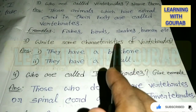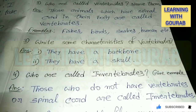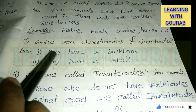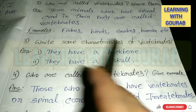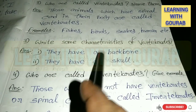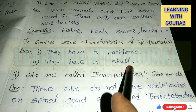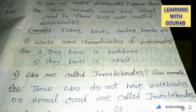Next question: Write some characteristics of vertebrates. Answer: They have a backbone. They have a skull.